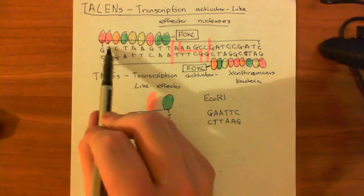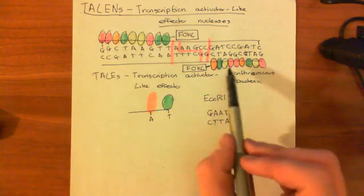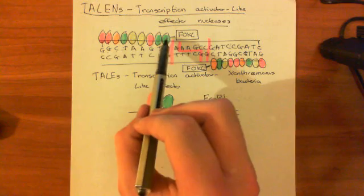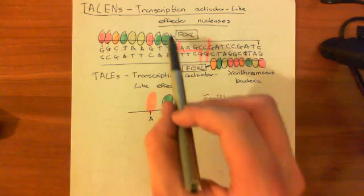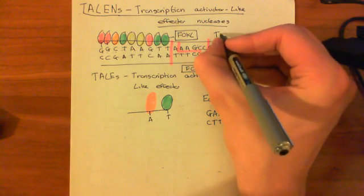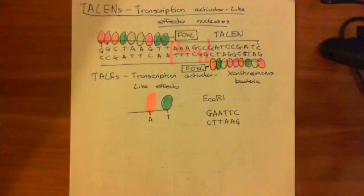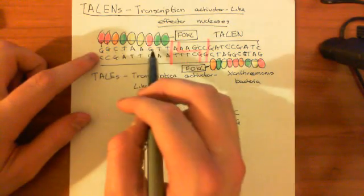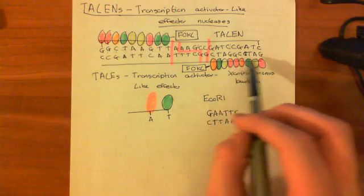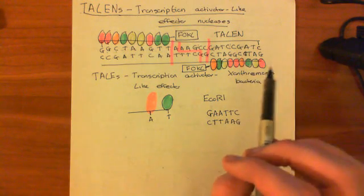All of the specificity is determined by which combination of Transcription Activator-Like Effectors you design for each TALEN arm. The entire structure — the nine TALEs on each side plus the two FokI halves — is called the Transcription Activator-Like Effector Nuclease, or TALEN. Because it requires a specific combination of around 18 nucleotides positioned in specific places, TALENs are extremely specific. You can make them even longer for greater specificity.